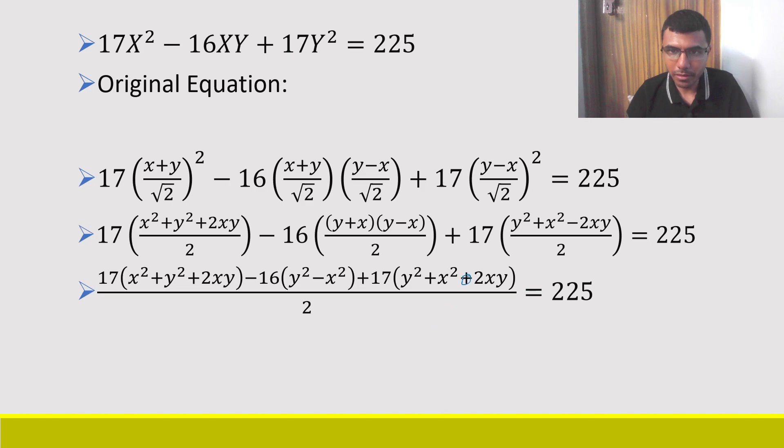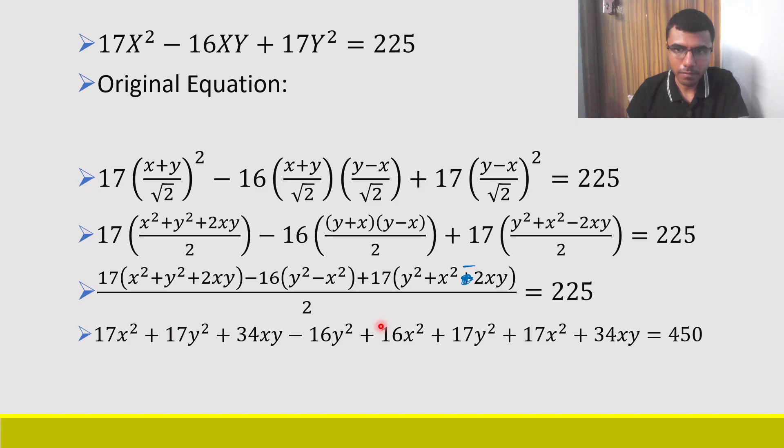Mistake. This should be minus 2xy. y² + x² - 2xy. What I did in this step is I sent this 2 here. What is 225 times 2? 450. And just multiply it.